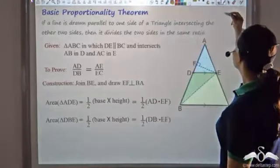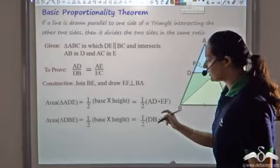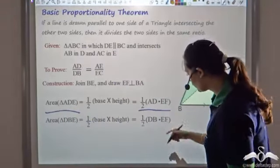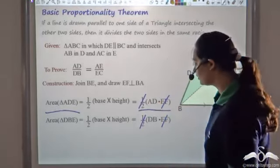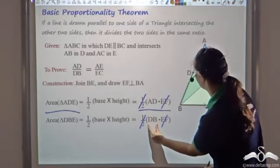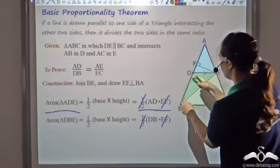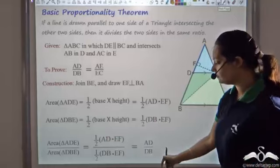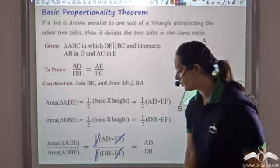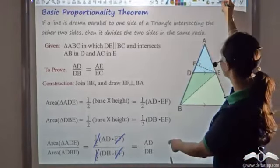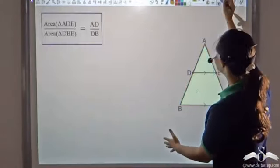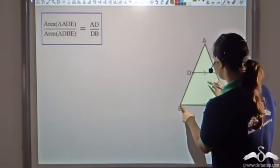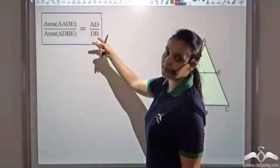Now you have the areas of two triangles. EF is common in both and half is common in both. So if I divide area of triangle ADE by area of triangle BDE, EF cancels and half cancels, leaving AD by DB. So area of triangle ADE divided by area of triangle DBE gives AD by DB. This is what we take forward.